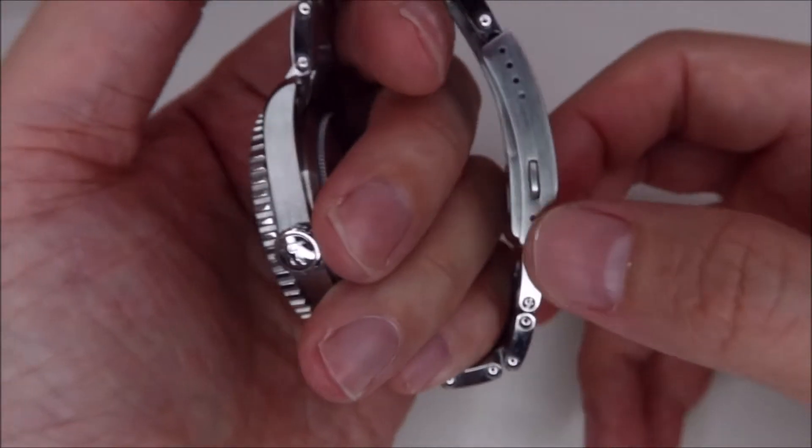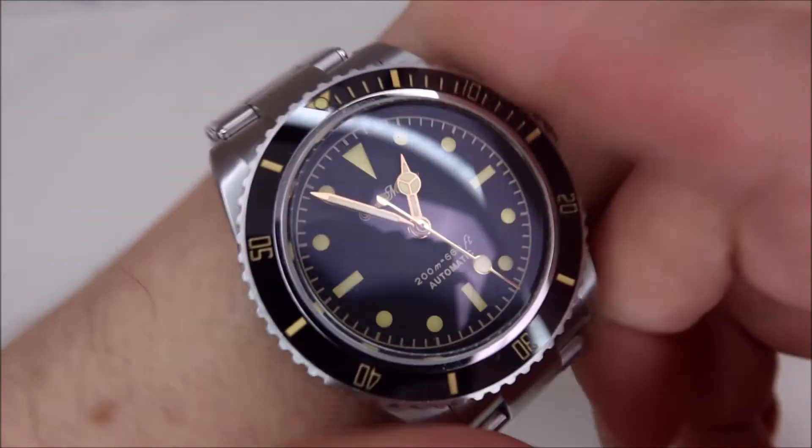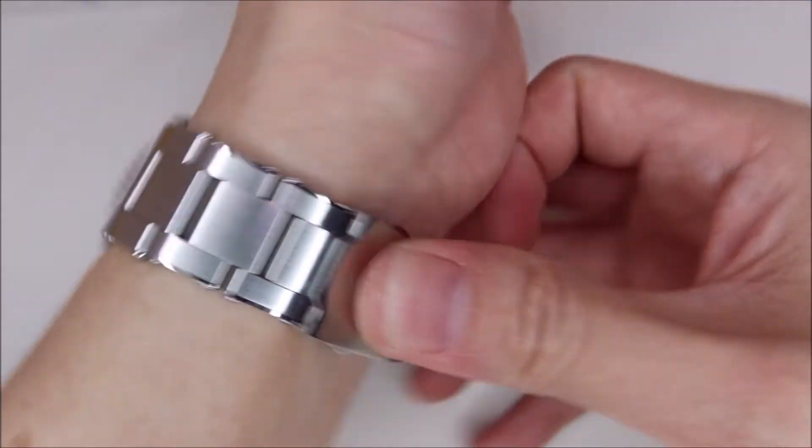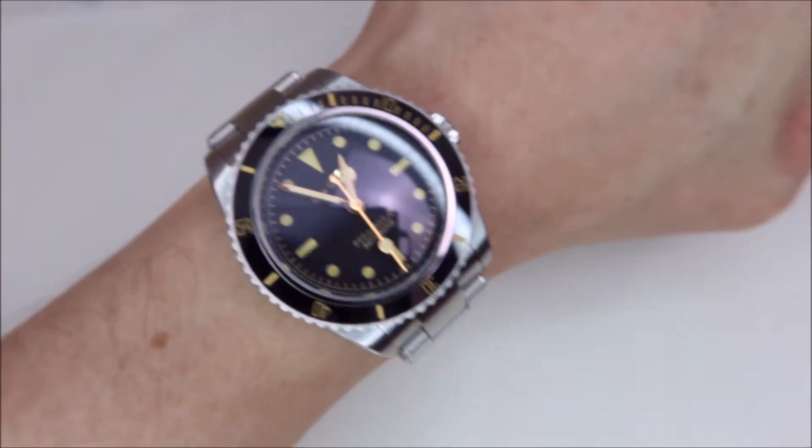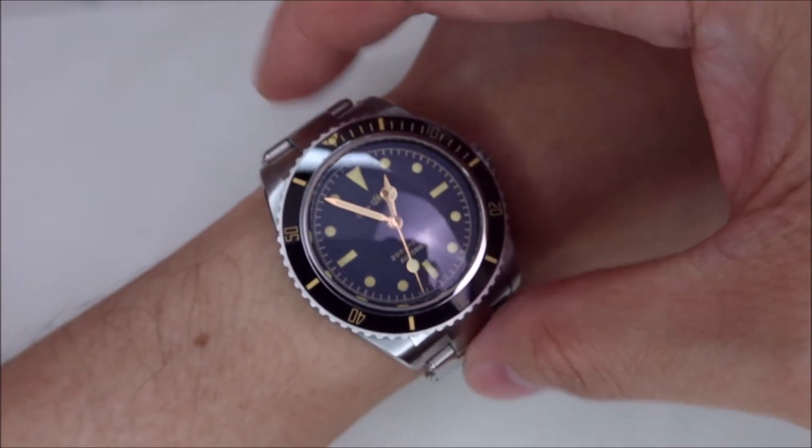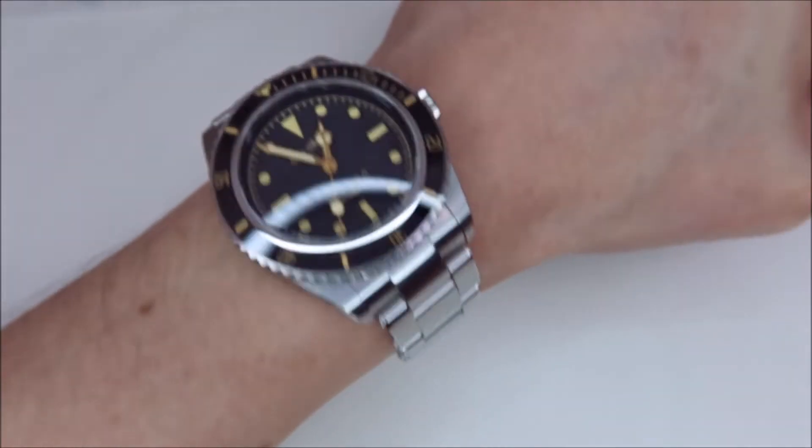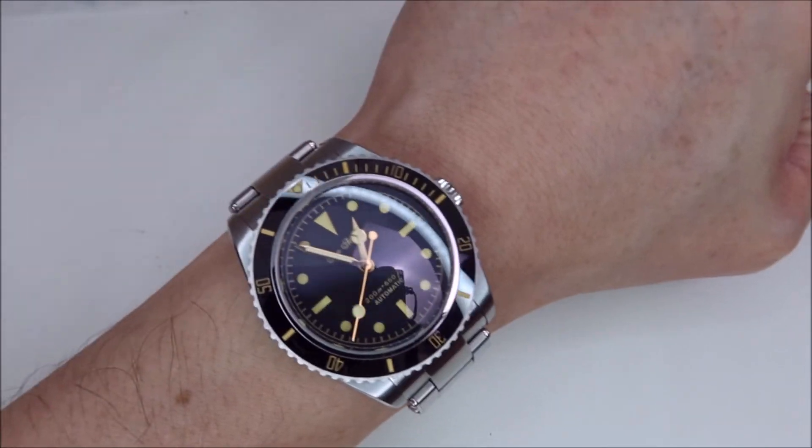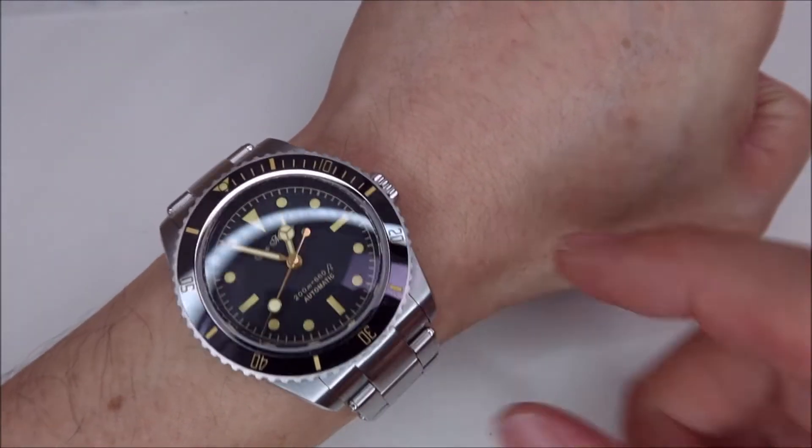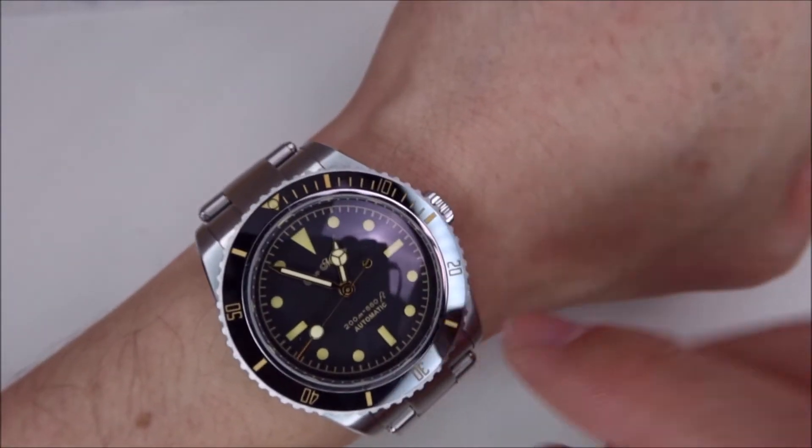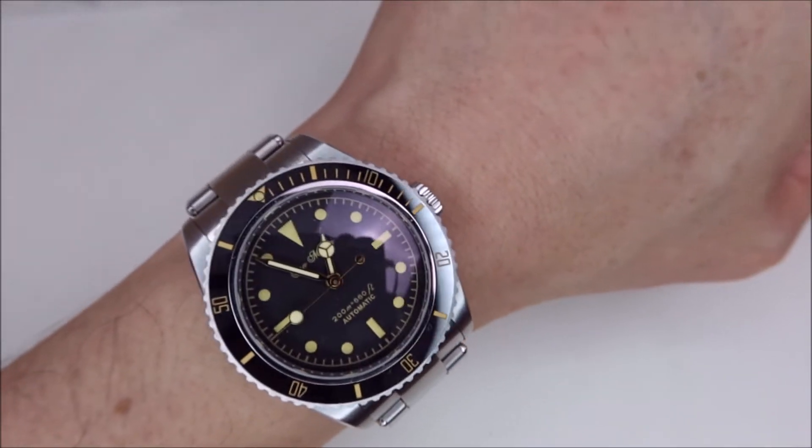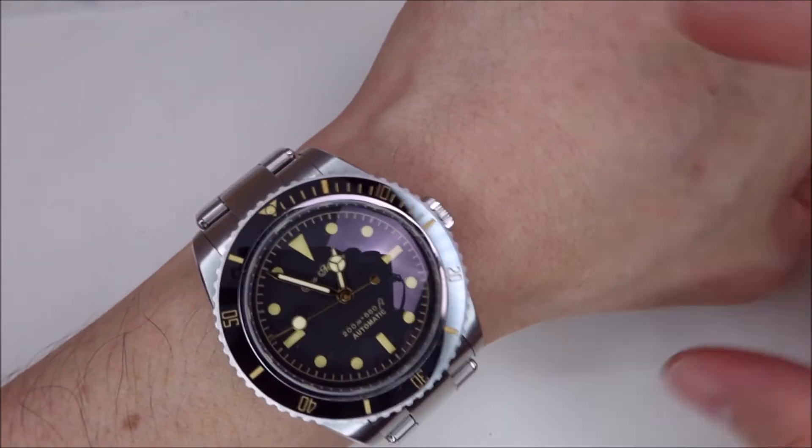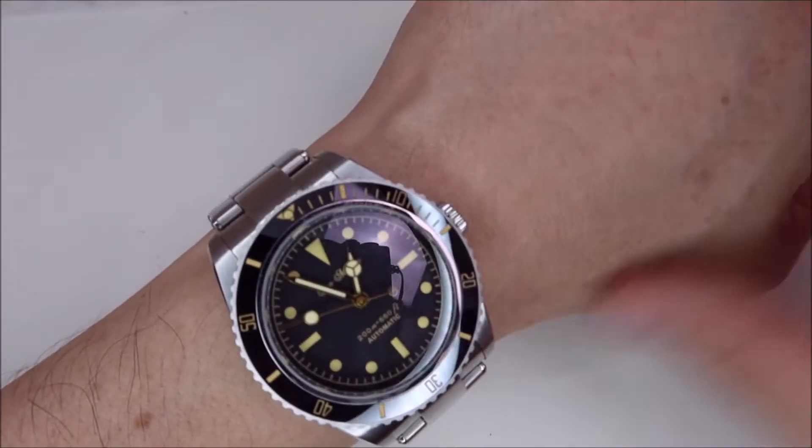Okay before I take this off, I think one of the so-called complaints about this watch, even though it's a small size watch, but the male end links makes the effective lug-to-lug slightly longer than the case of the watch itself. So hopefully with that female end link, we can have a true lug-to-lug distance that is only the size of the watch case rather than the protruding male end link.